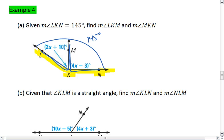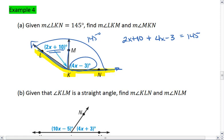Since these two angles share side MK or KM, we can use our angle addition postulate. We can say that the left angle, which is 2X plus 10, plus the right angle, which is 4X minus 3, equals the entire big angle, which is 145 degrees. Using algebra, we combine like terms, so we get 6X plus 7 equals 145. Subtract 7 from both sides, we get 6X equals 138. Divide by 6, and we get X equals 23.